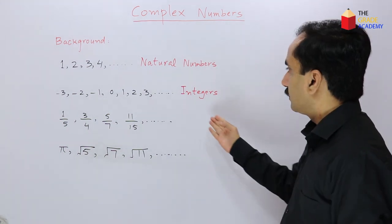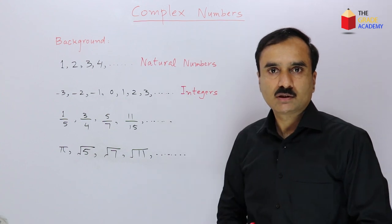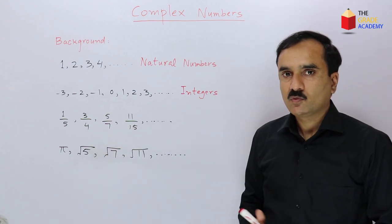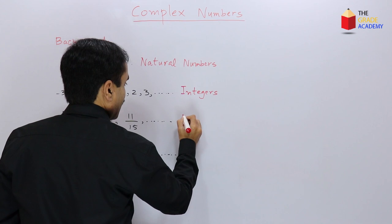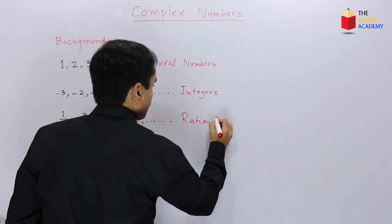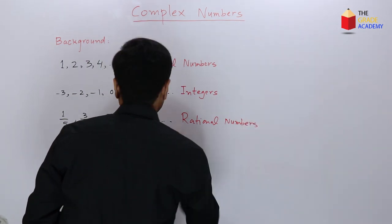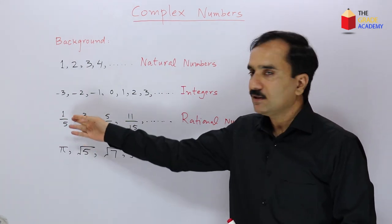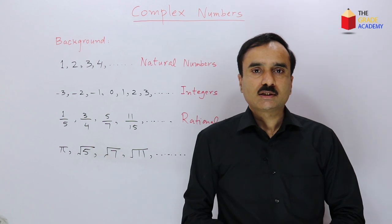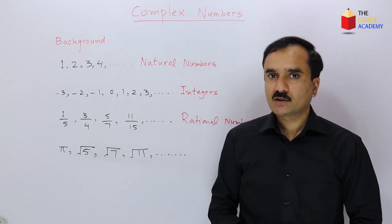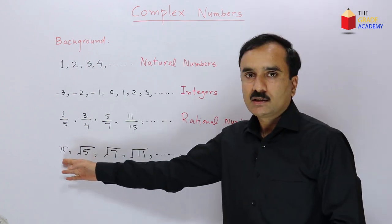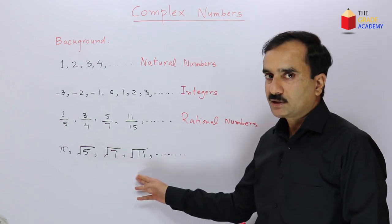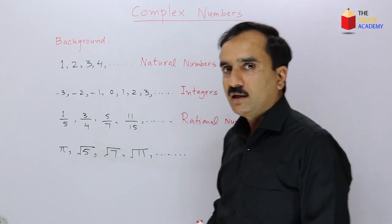In the set of integers we did not have any fractional numbers. With the introduction of fractions we got a new set of numbers called the set of rational numbers. All rational numbers are numbers which can be written in fractional form. But later on some numbers were discovered which could not be expressed in the form of fractions, like pi, square root of 5, square root of 7, square root of 11. These are called irrational numbers.